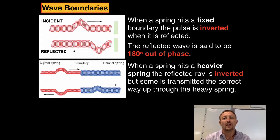So what we notice is that when a spring hits a heavier spring, the reflected wave that passes through the light spring is inverted but also some of the wave is actually passed through the heavy spring itself.